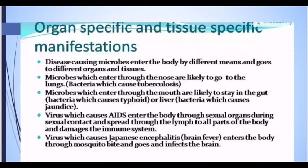Disease-causing microbes enter the body by different means and go to different organs and tissues. Microbes which enter through the nose are likely to go to the lungs — such as the bacteria which cause tuberculosis. Microbes which enter through the mouth are likely to stay in the gut, such as bacteria which causes typhoid, or in the liver, such as bacteria which causes jaundice.